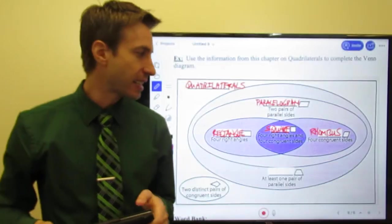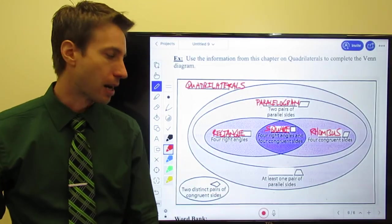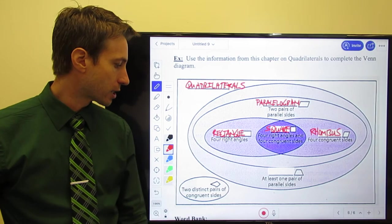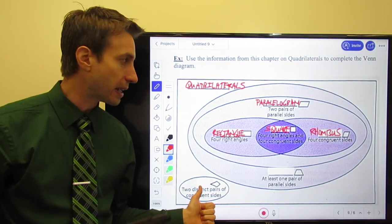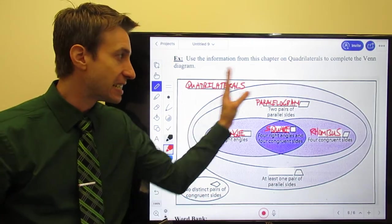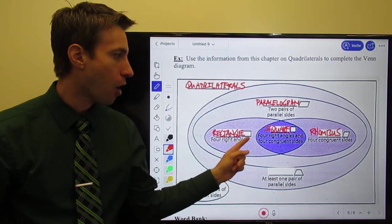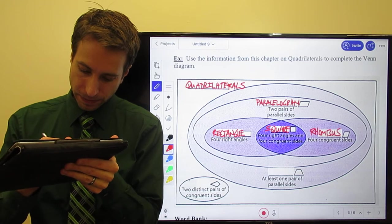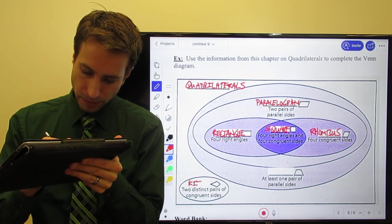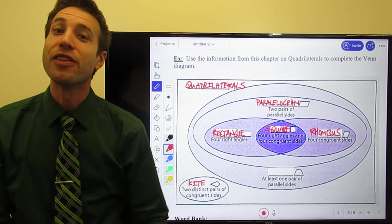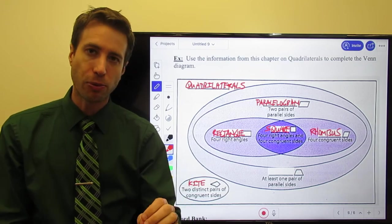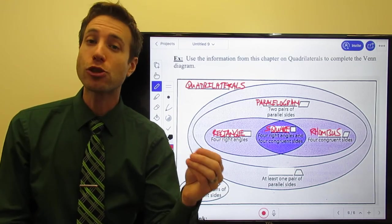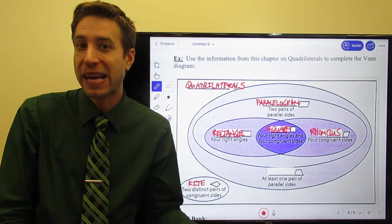Then, just more recently here, what we did is we talked about a couple more figures. First, we talked about a figure that absolutely is a quadrilateral, but is not in any way at all a parallelogram.